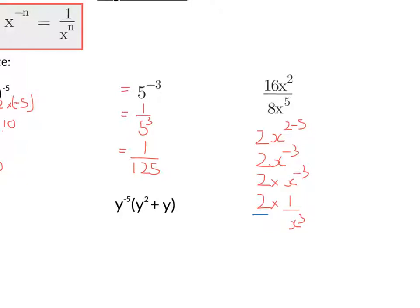Now I can multiply these two things together. Putting in an over 1 to help me. 2 times 1 is 2. 1 times x cubed is x cubed. So my answer is 2 over x cubed.